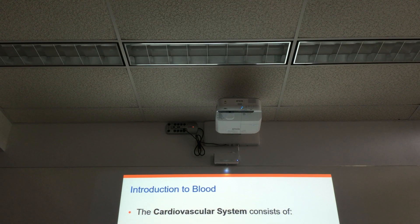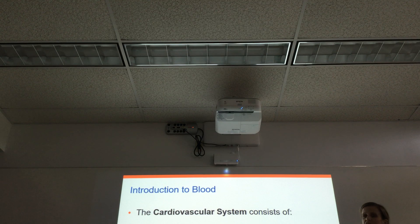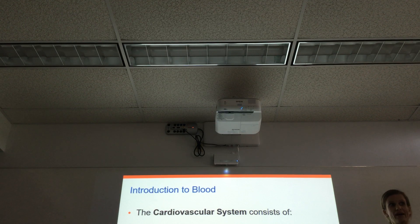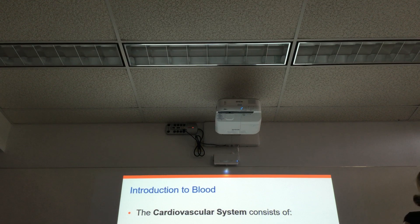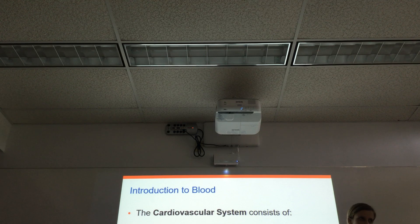This whole first section in AMP2 is on the cardiovascular system — the whole first chunk of AMP2. The cardiovascular system includes three main components: cardio means heart, vascular pertains to the vessels. So the cardiovascular system includes the heart, it includes the blood vessels, and then it also includes the blood that flows through those vessels.